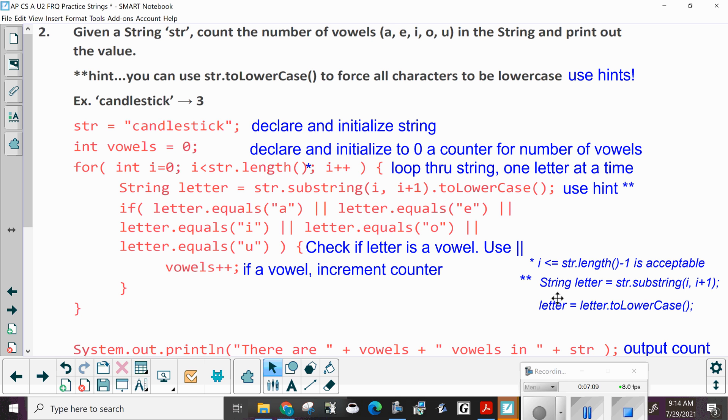You could, down here, if you want to do it in two steps, create your string, letter, string dot substring i, i plus one. And then letter is set to letter dot to lowercase. This is doing it in two lines of code. This is all in one line of code. Either way works. But again, use that hint. Because if you don't use the hint, then you not only have, then this if statement becomes even longer than it is. Because you would have to check for capital A, capital E, capital I, capital O, capital U, if you did not convert everything to lowercase.